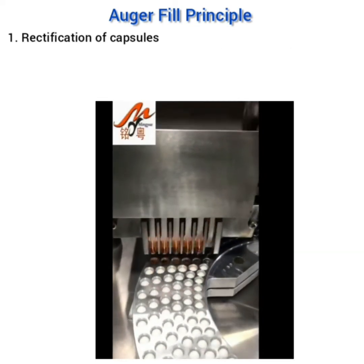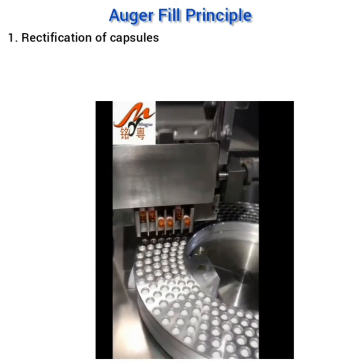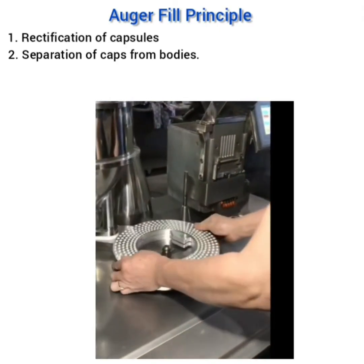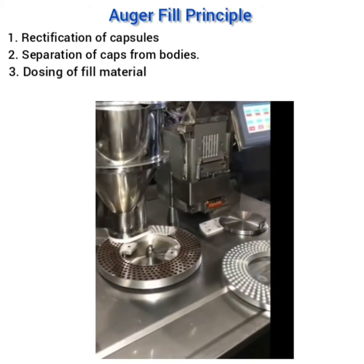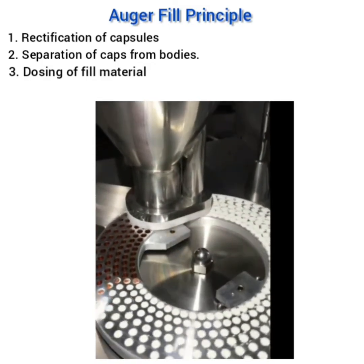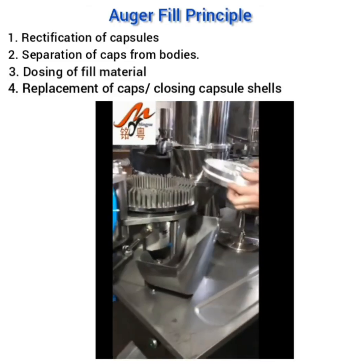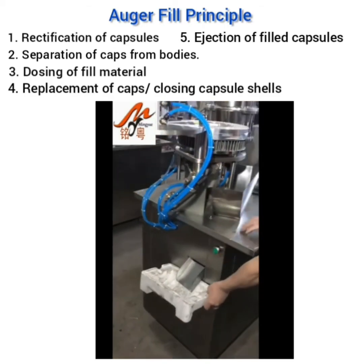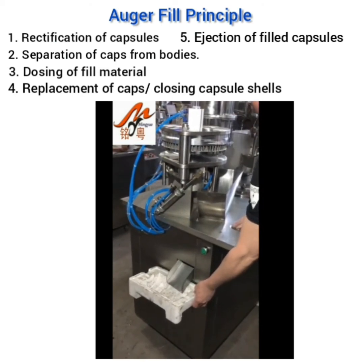The steps of the auger fill principle are as follows. First is rectification of the capsules — empty capsules are placed in the filling ring. Second is separation of caps from the body. Third, the ring is placed on the turntable under the hopper for dosing of the fill material. Fourth is replacement of the caps — the capsule bodies and caps are rejoined. Fifth is ejection of the filled capsules.